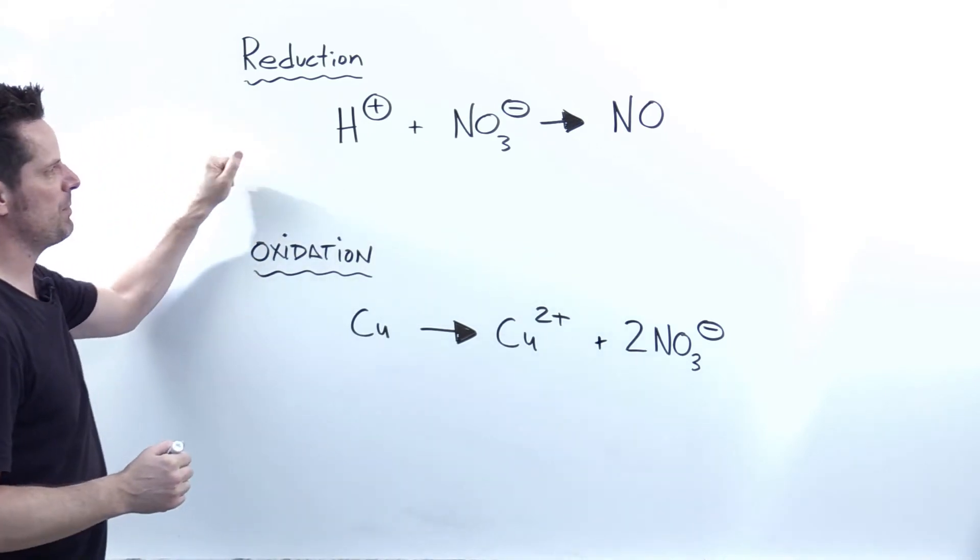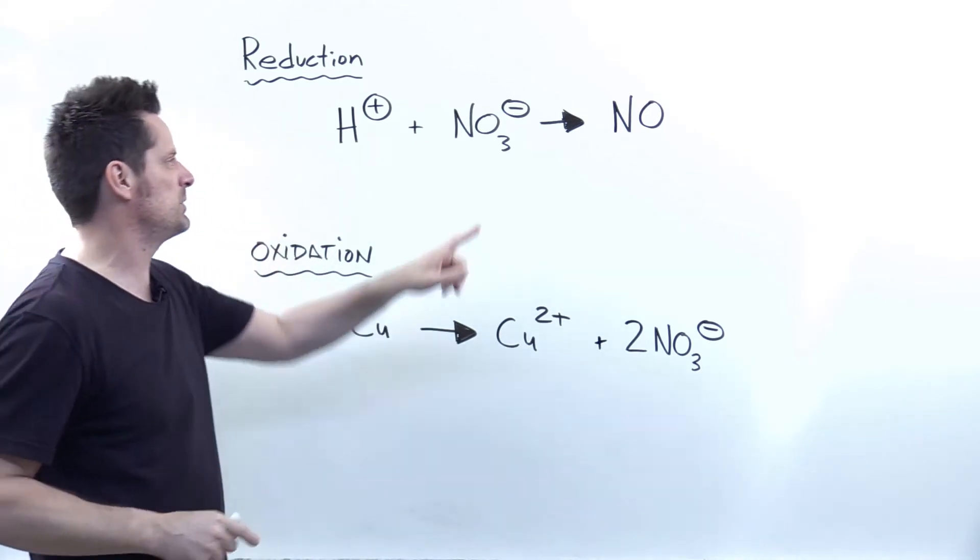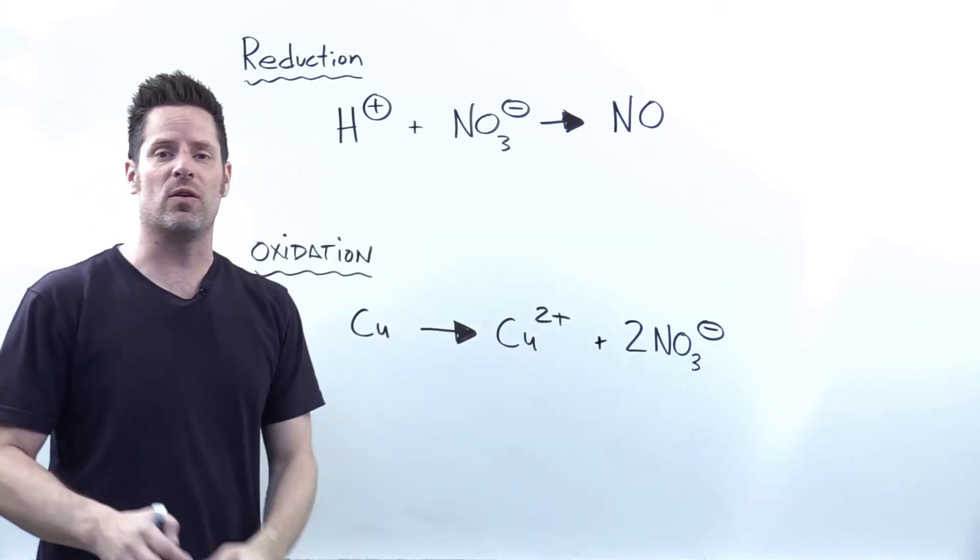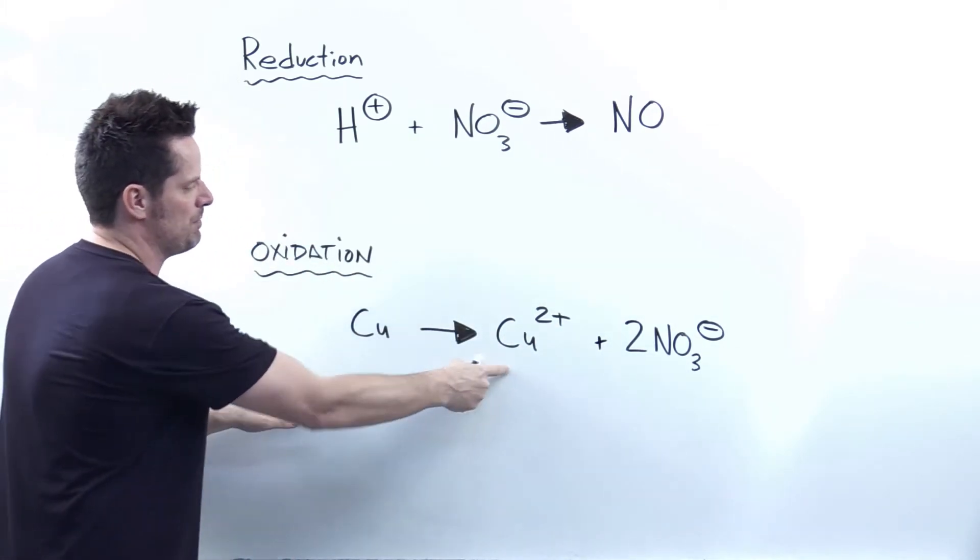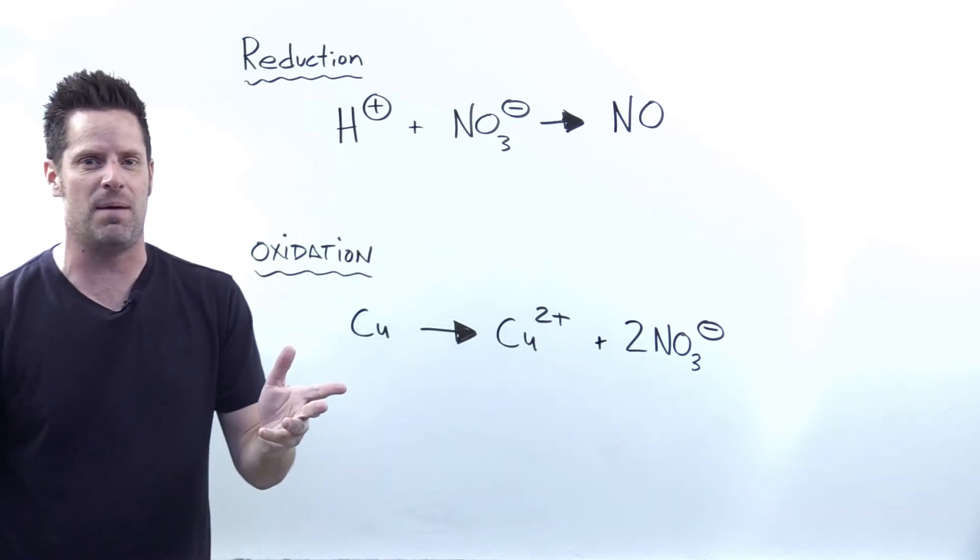Step one is we balance all of the elements that are not oxygen or hydrogen. In this half reaction up here, you can see that the only one that fits that description is nitrogen. One nitrogen on the left, one nitrogen on the right. So it's totally balanced. In the bottom reaction, it's copper, copper, totally balanced, atom for atom. So I'm done with that step.